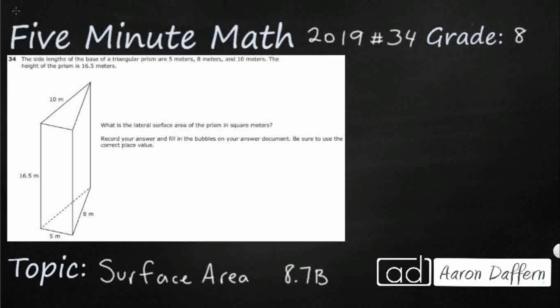So we have a triangular base prism here and they've given us the side lengths of the base both in the problem—5, 8, and 10—and they've also given them to us in this visual right here. They've given us the height, so we didn't necessarily even need the picture, even though it is helpful.